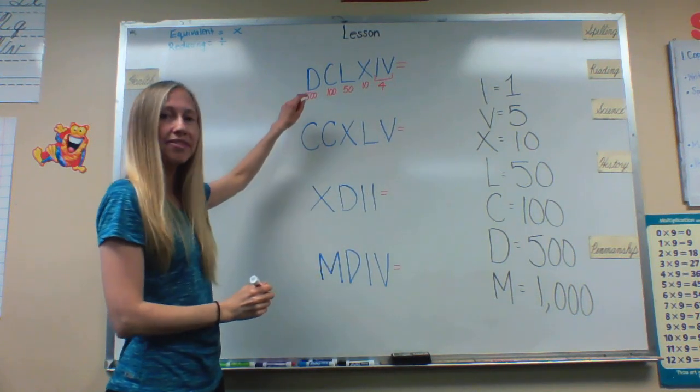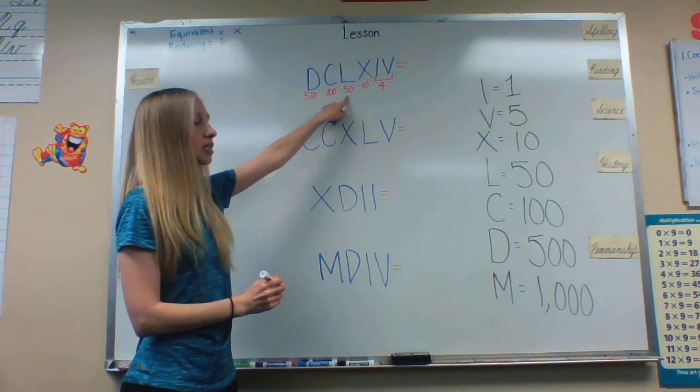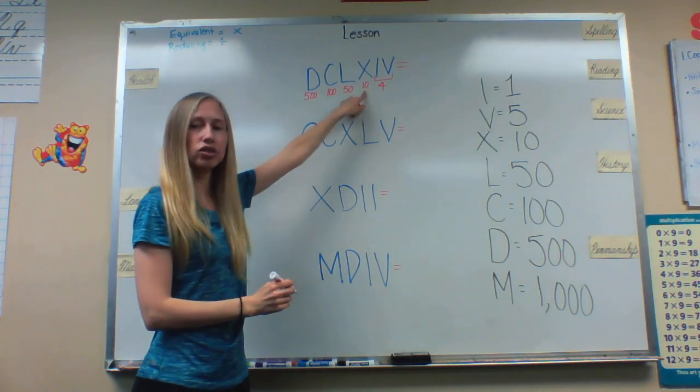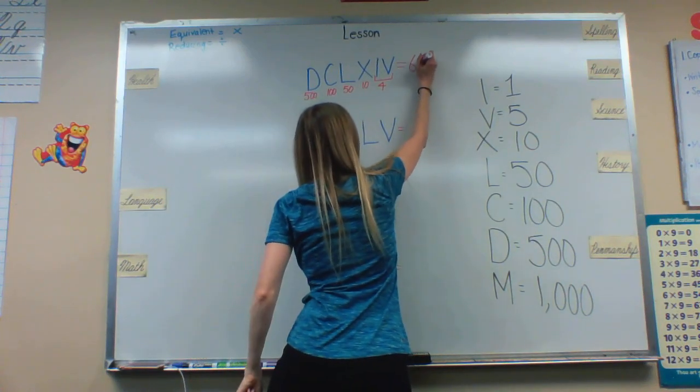Then I will just add them. 500 plus 100 is 600, 650, 660, 664. And I'll write that right here.